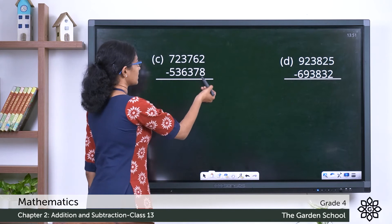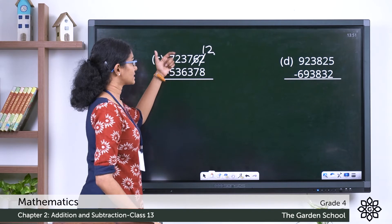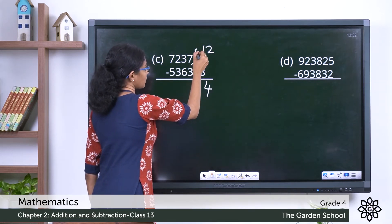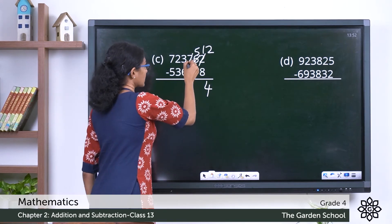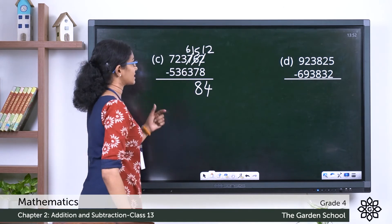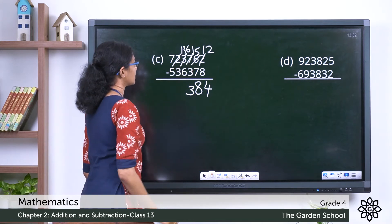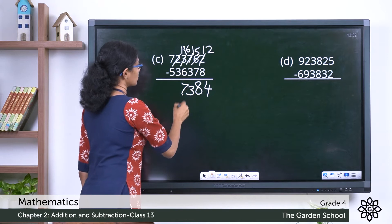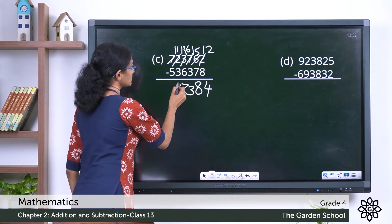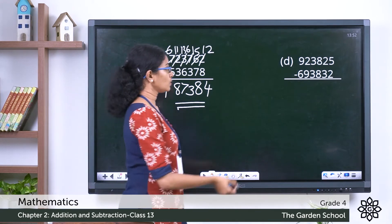Question C: we cannot do two minus eight, so we borrow — ten is given to the ones place, making twelve ones. Twelve minus eight is four. In the tens place we have five; five minus seven we can't do, so we borrow again — fifteen minus seven is eight. In hundreds the seven becomes six; six minus three is three. Three minus six again requires borrowing, making thirteen; thirteen thousands minus six thousands is seven. This two becomes one, we borrow again: eleven minus three is eight, and six minus five is one. That is the answer for question C.